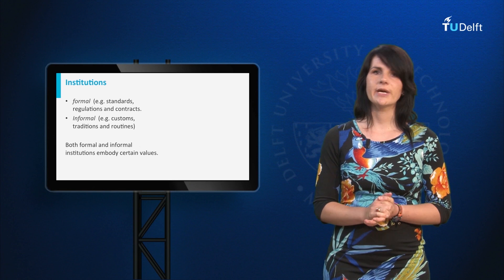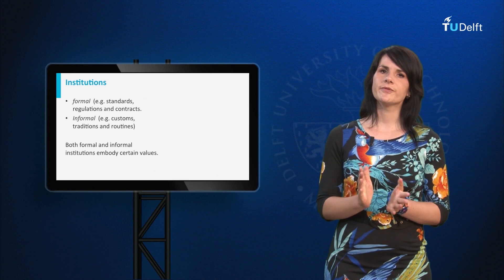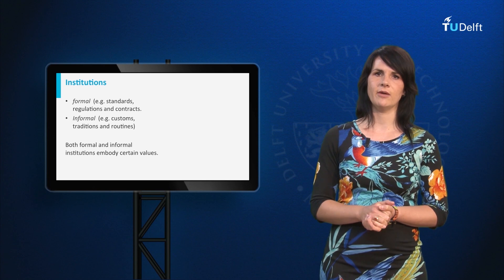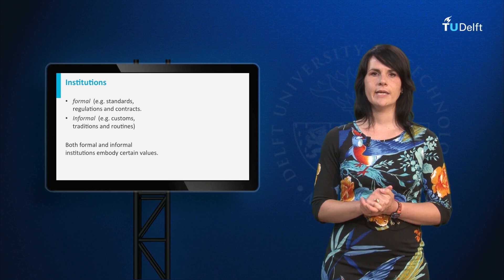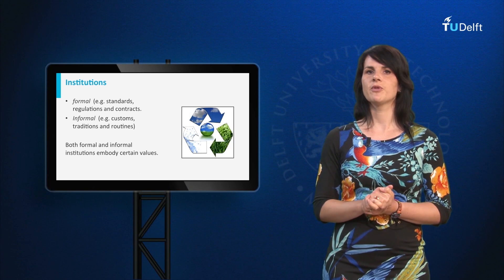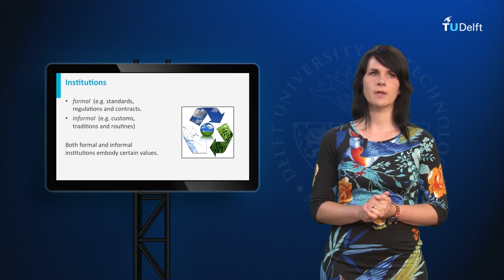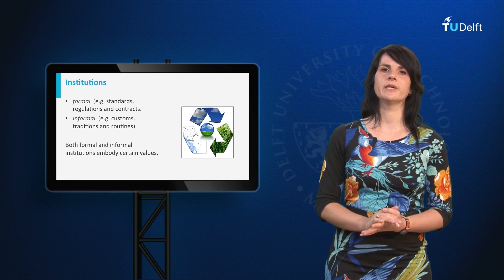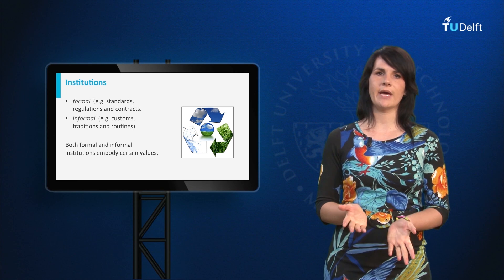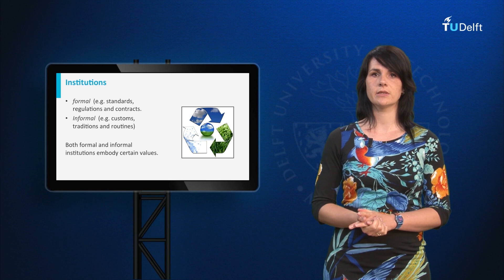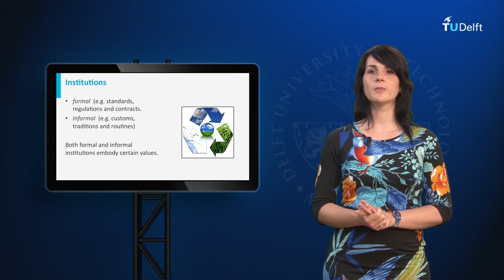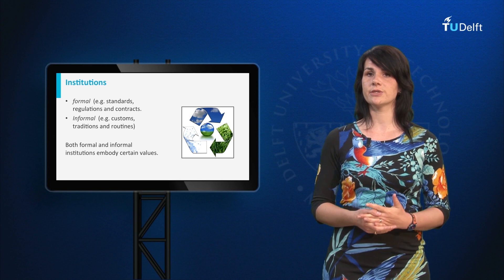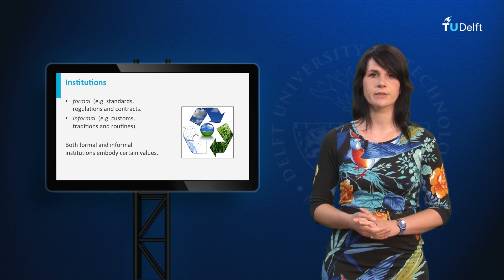With institutions I mean the rules of the game, that can both constrain and enable behaviour. Institutions can be formal and informal. Formal institutions are for instance laws, standards, regulations and contracts. Informal institutions are for example customs, traditions and routines.